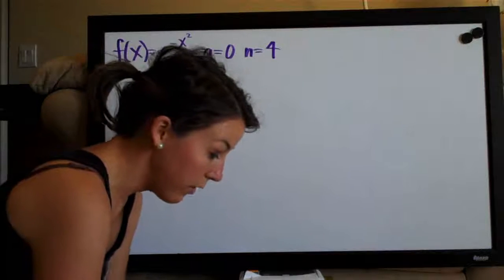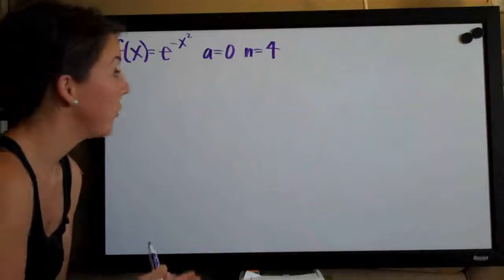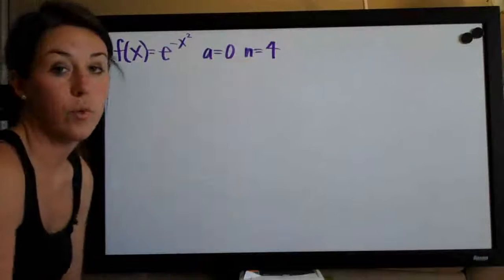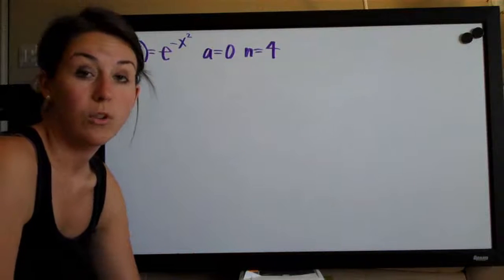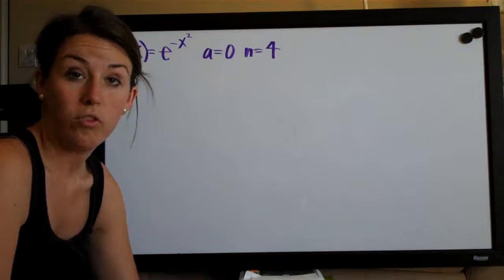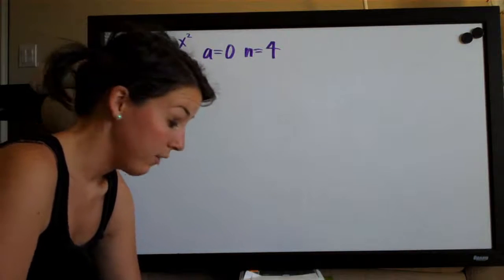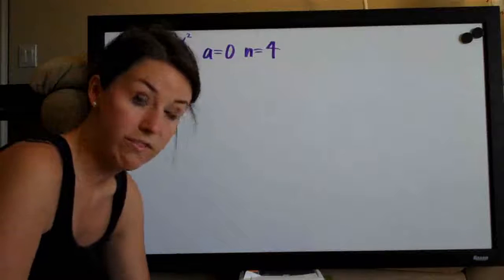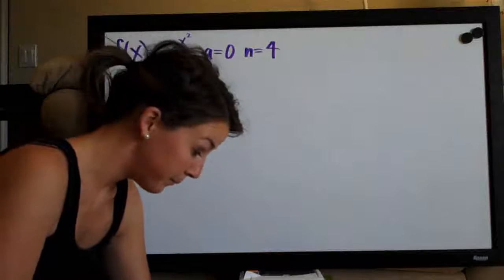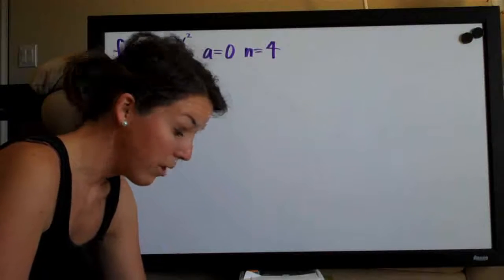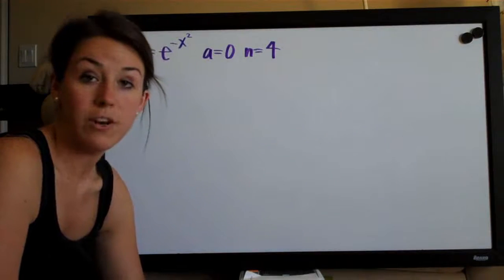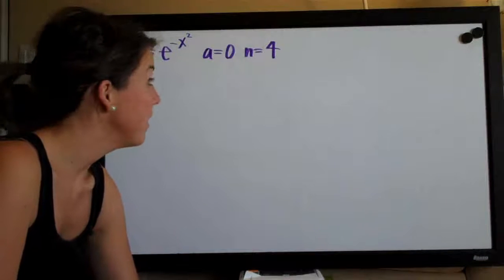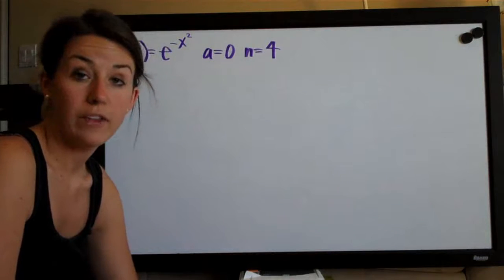They asked us to compute the nth degree Taylor polynomial and they've said that n equals four, so we're looking for the fourth degree Taylor polynomial about a, which they've given us as zero. So the first thing we want to do with a Taylor polynomial problem pretty much always is to go ahead and construct the following table.